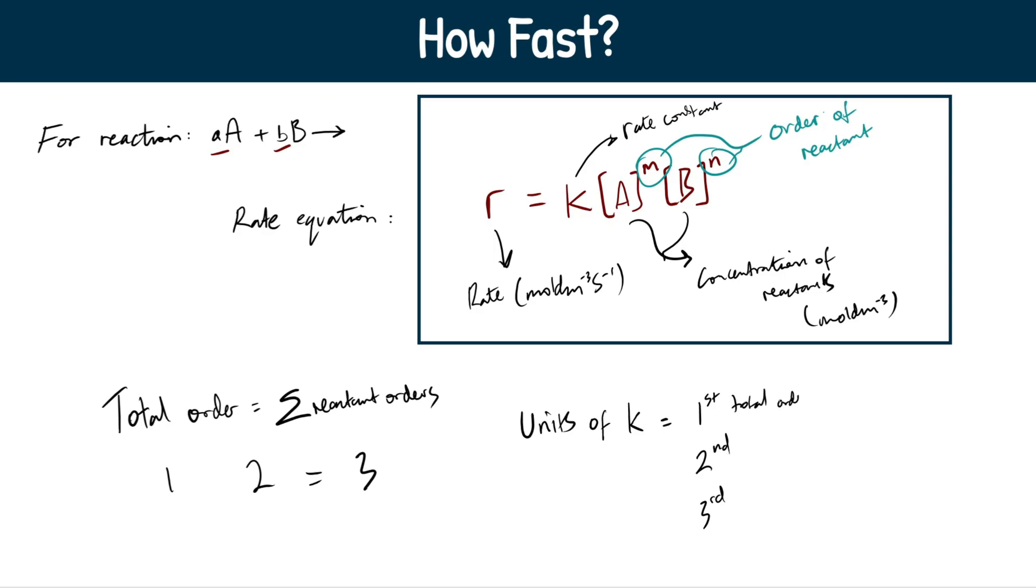So if it's first total order, second total order, and third total order. Let's go through these. Total order. First total order is just per second, because everything essentially cancels. Second order is going to be per mole decimeter cubed per second. And then third total order is going to be mole to the minus two decimeter to the sixth per second.